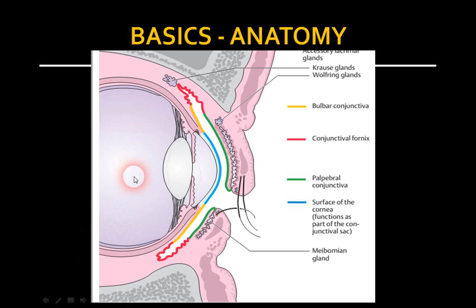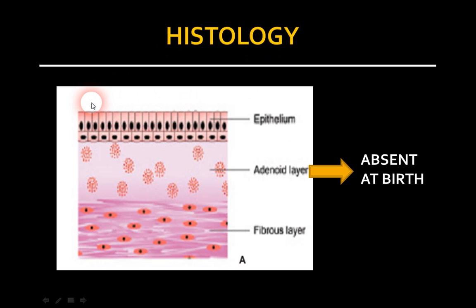Now let us start with the anatomy of conjunctiva. In this picture, you can observe the eyelid — what covers this eyelid is called the palpebral conjunctiva, shown in green. Here is the sclera or eyeball, shown in yellow — this is the bulbar conjunctiva. And this is the cornea. You can also observe the conjunctival fornices here.